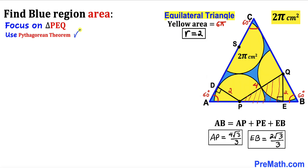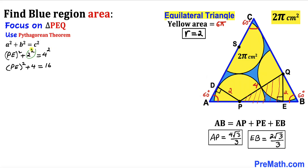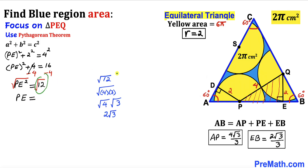Now focusing on right triangle PEQ, applying the Pythagorean theorem: a² + b² = c², where the hypotenuse is 4. So PE² + 2² = 4², giving PE² + 4 = 16. Subtracting 4 from both sides, PE² = 12. Taking the square root, PE = 2√3.